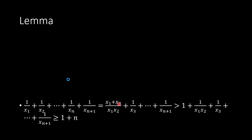But x1 plus x2 is larger than x1 times x2 plus 1. So we have 1 plus 1 over x3 all the way to 1 over x_n+1. Now look at these n numbers. We can see their product is 1.